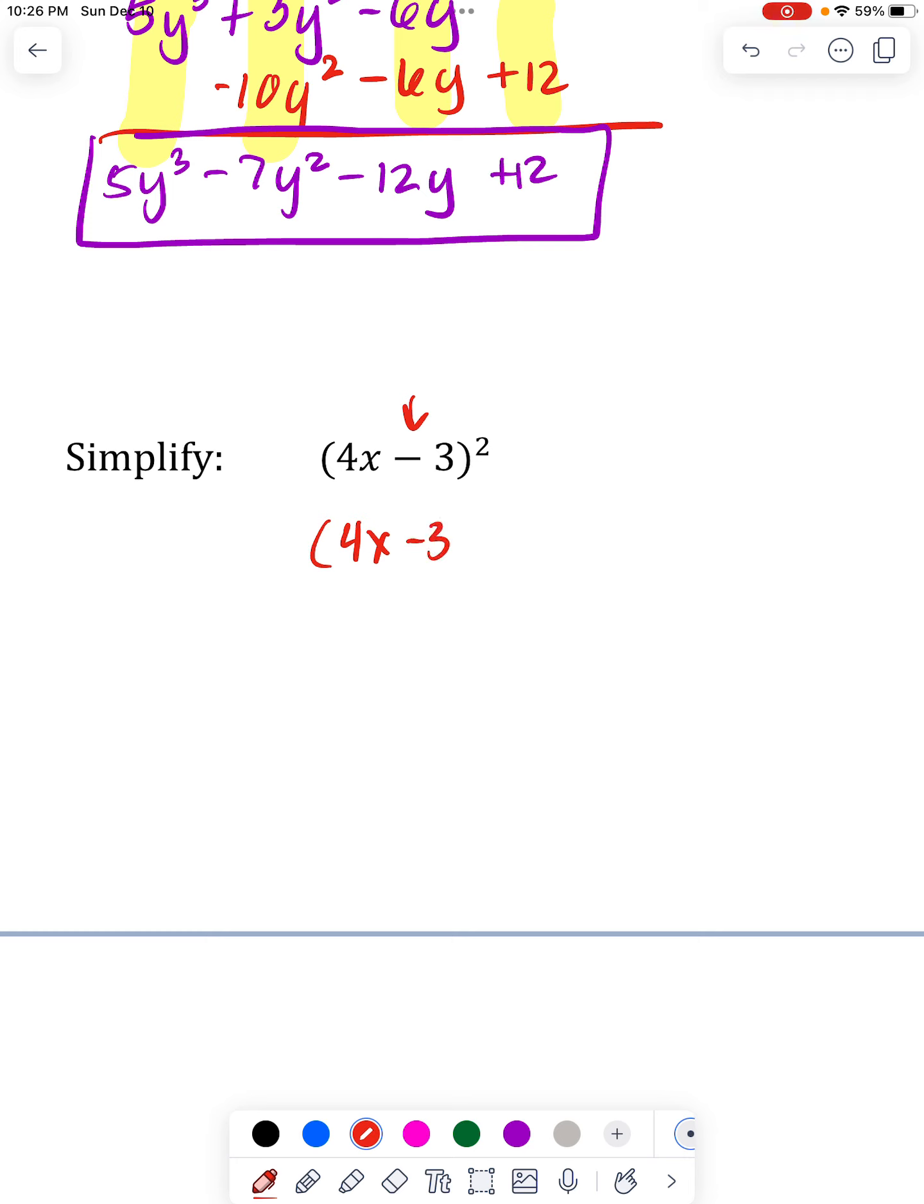what squaring means is multiply by itself. You have to take this and multiply it by itself. So this is a FOIL problem. And the difference maker is having that plus or minus in between the 4x and the 3. So I'm just going to go ahead and FOIL it.